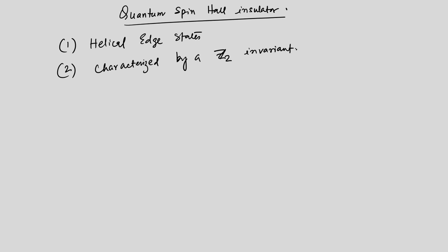We will see what the Z2 invariant is, sticking to the simpler situation where the system has inversion symmetry, which makes calculation of the Z2 invariant easier. The main ingredient of this kind of quantum spin Hall insulator is what is known as spin-orbit coupling.